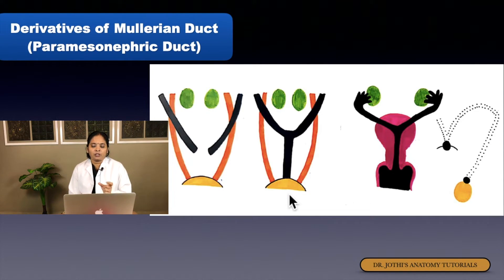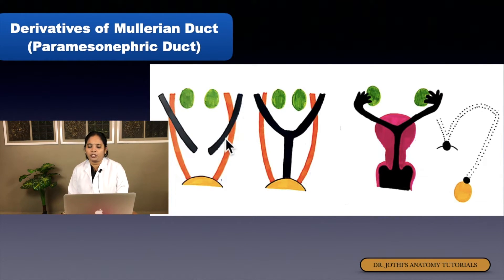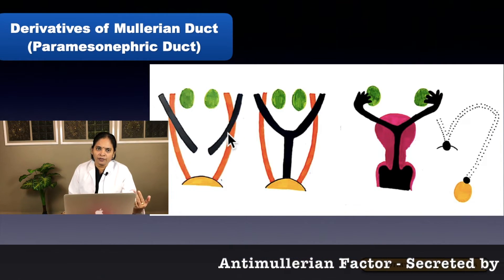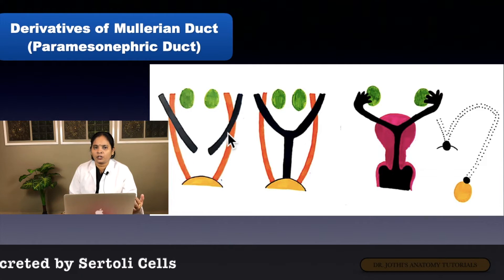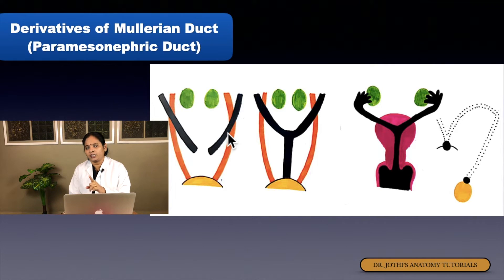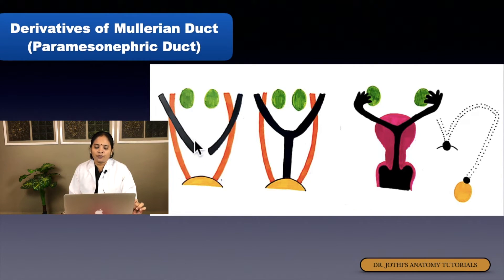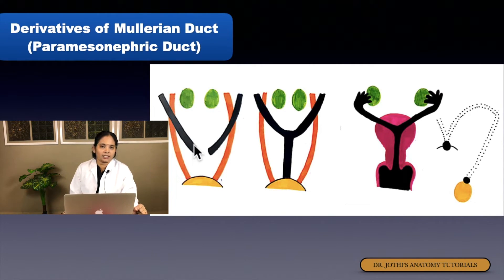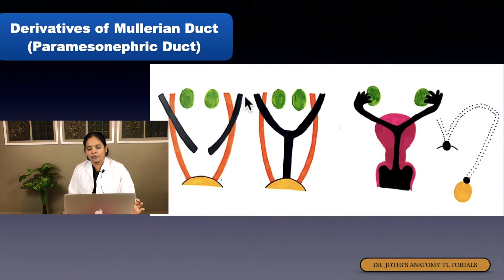In summary, the paramesonephric duct — or Mullerian duct — forms the uterus, uterine tube, and vagina. In the male, the paramesonephric duct disappears due to the release of anti-Mullerian factor, which is secreted by the Sertoli cells of the testis. The SRY gene and testis-determining factor drive this. If it persists, it forms some portions like the appendix of the testis. In the female, the mesonephric duct or Wolffian duct disappears, and the paramesonephric duct persists to form the uterus, uterine tube, and vagina.